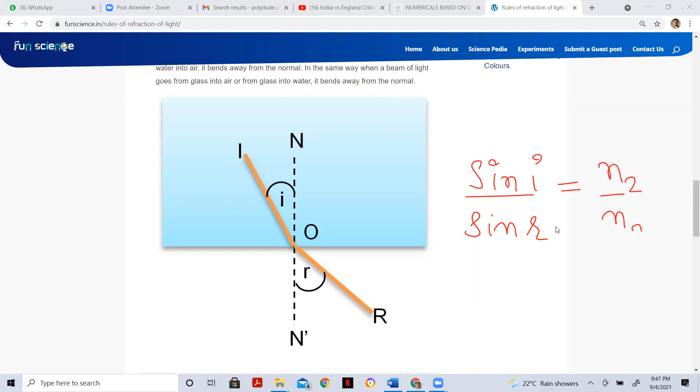Now, what is n2? n2 is medium 2. Where is the refracted ray? Refracted ray is in medium 2 and medium 1 is one where the ray is incident.